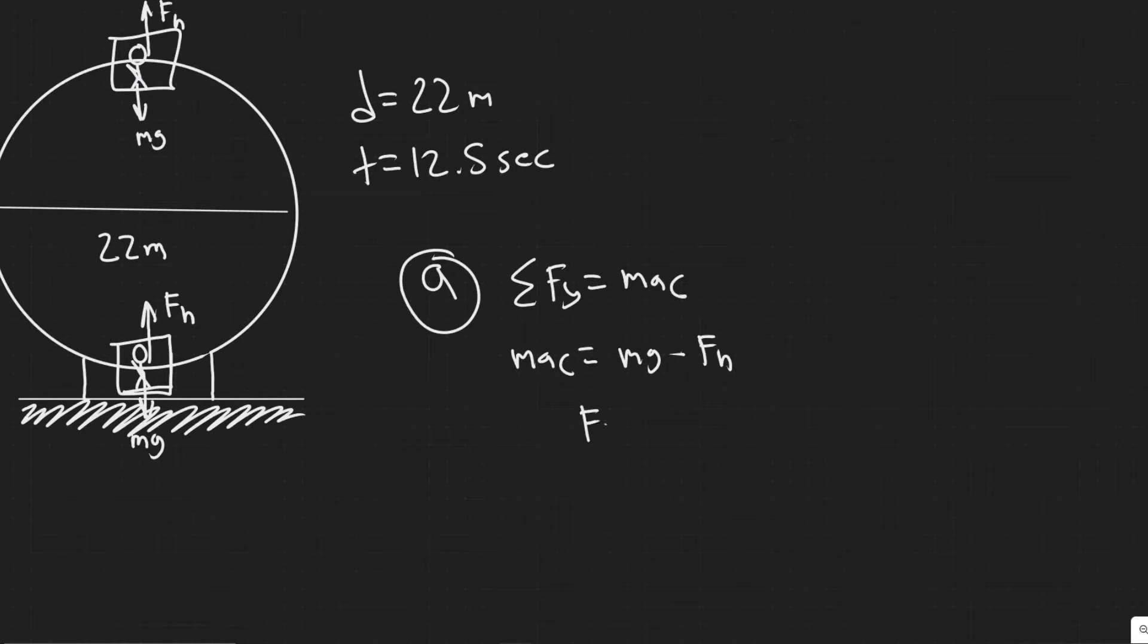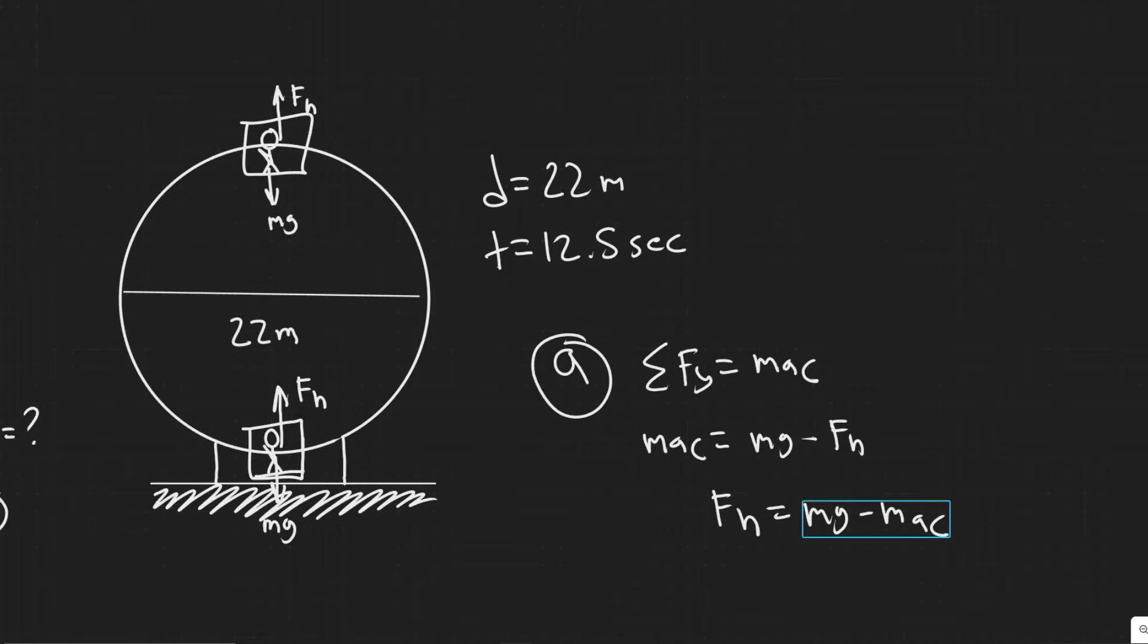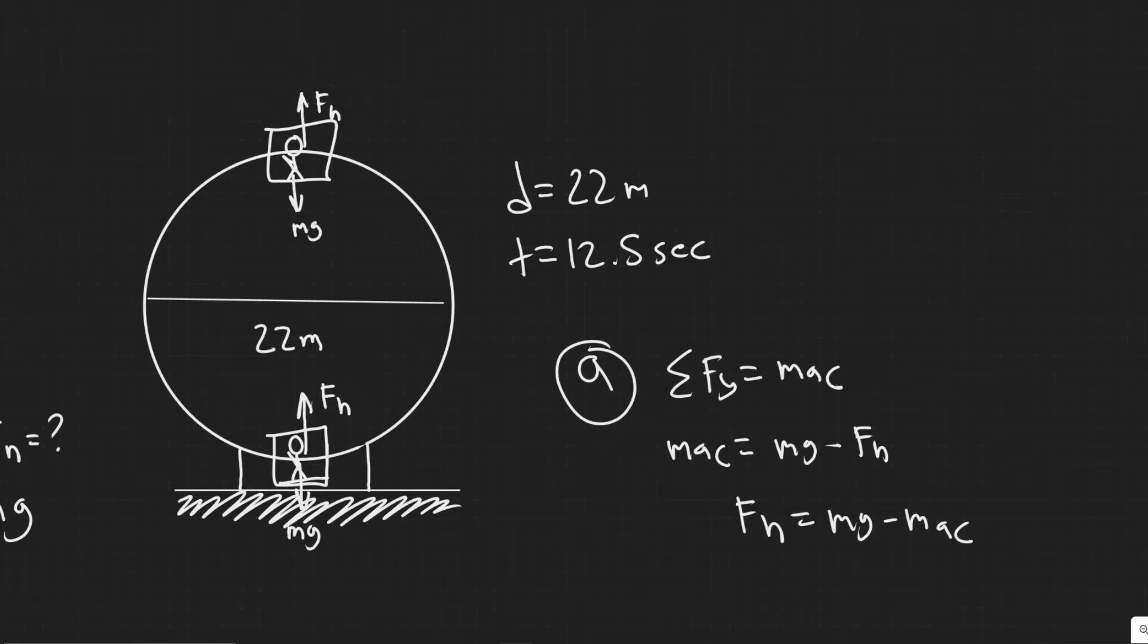So basically, this will tell you F sub n is equal to, just moving this to the other side, and then moving this back, mg minus A sub C. So this will make sense, because we know we have M A M G, but we have to subtract the centripetal acceleration, because that's going to cause us to go up like this a bit.